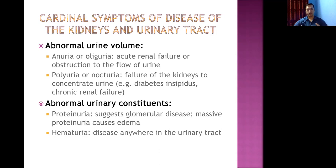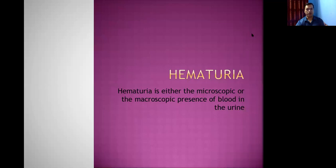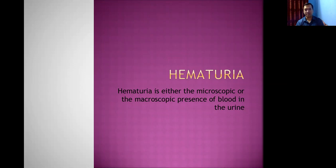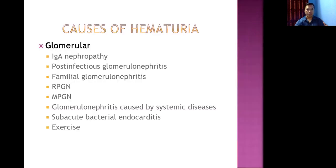Now, hematuria is the presence of RBCs in the urine — it can be microscopic or macroscopic. Microscopic hematuria is not visible to the naked eye but detected on microscopic examination. Macroscopic hematuria is frankly red urine visible to the eye. There are many causes of hematuria.